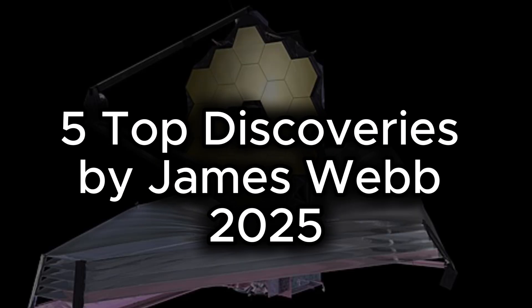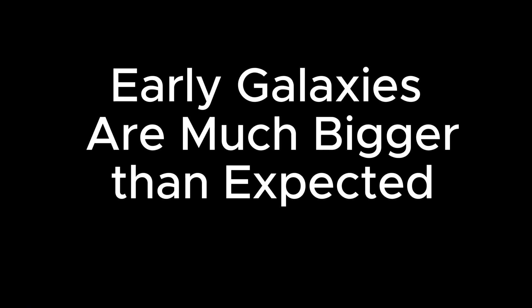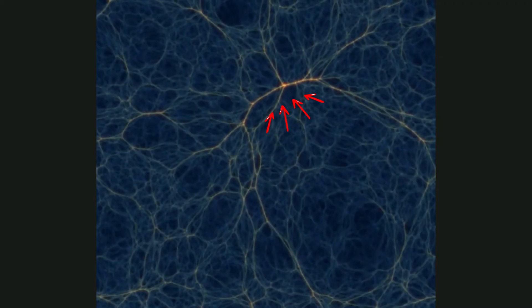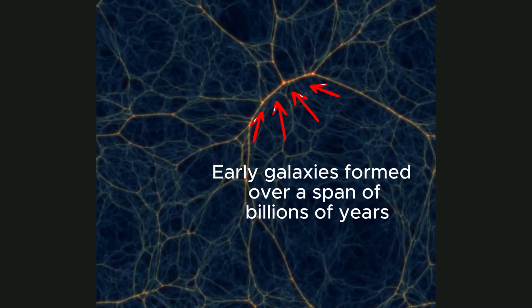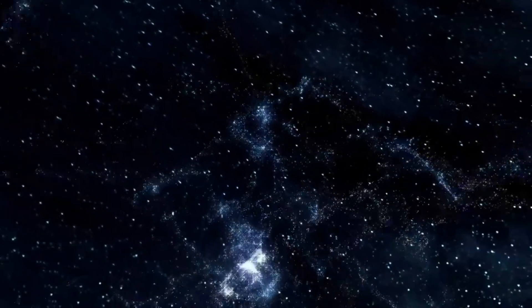Each new discovery is more fascinating and intriguing than the one before it. For decades, the standard view, shaped largely by the Lambda CDM cosmological model, was that the early universe was filled with small, chaotic galaxies that gradually merged and evolved over billions of years. These galaxies were thought to be the building blocks of the massive, structured galaxies we see today.